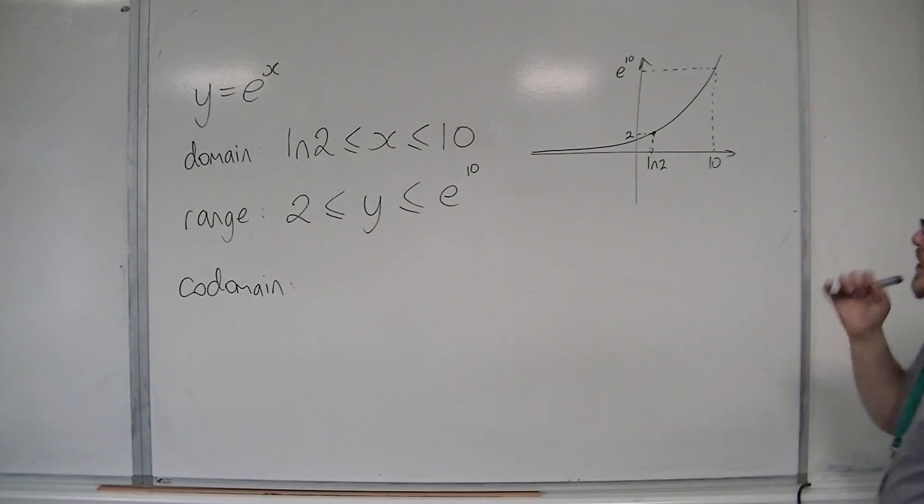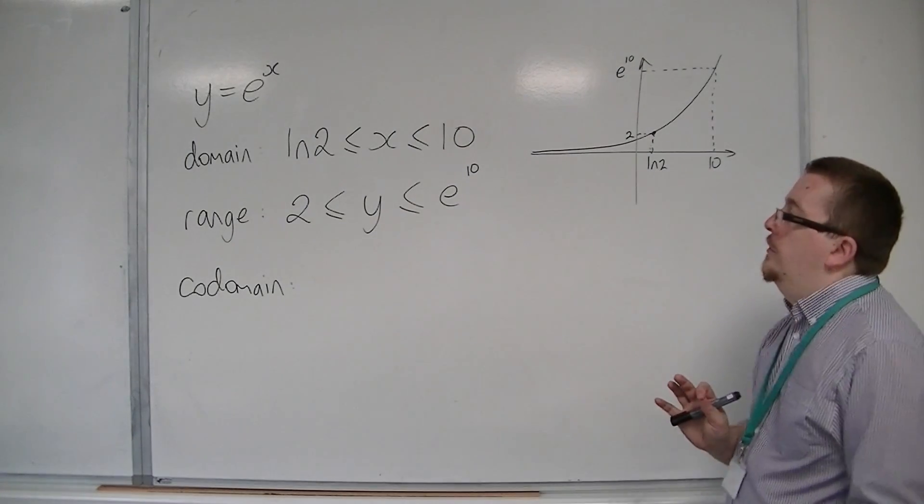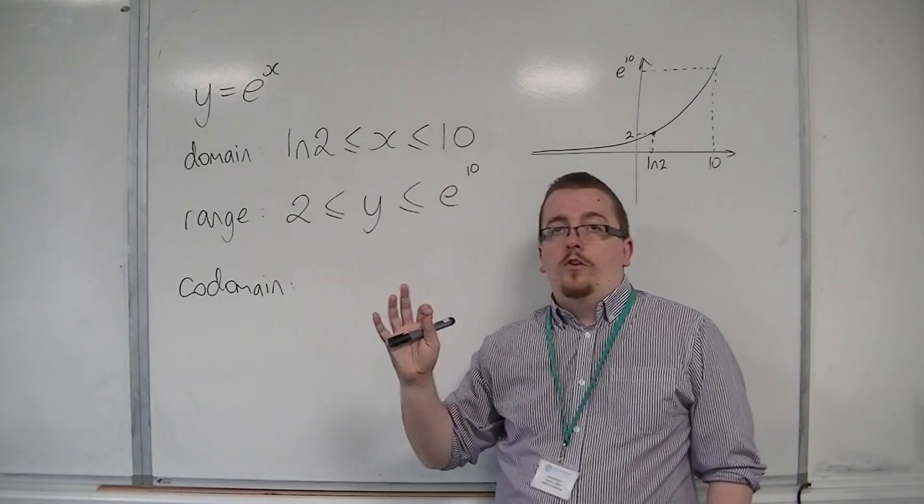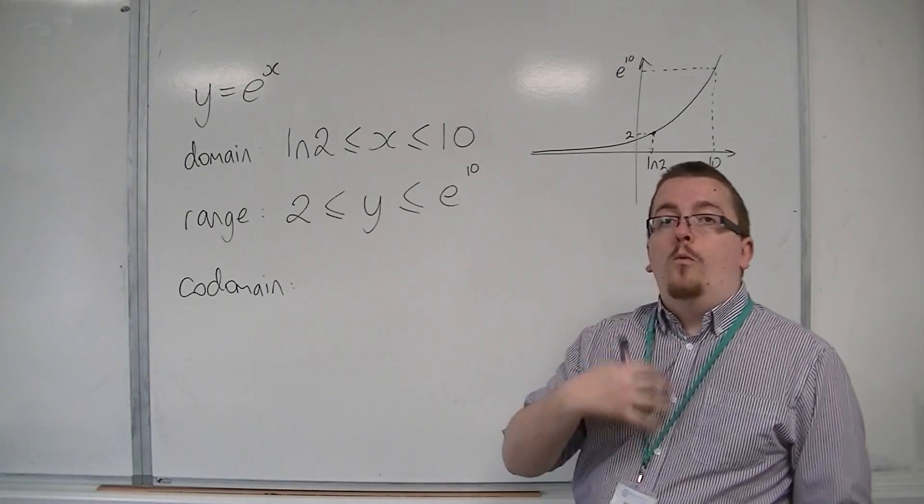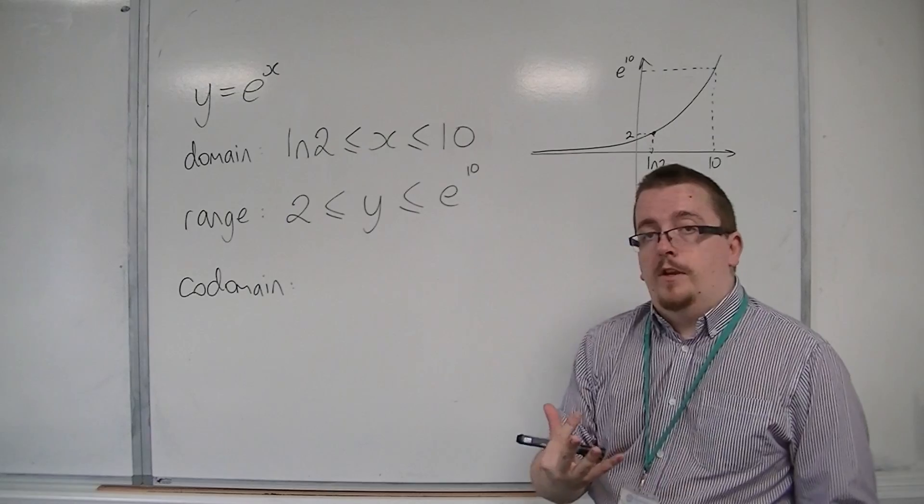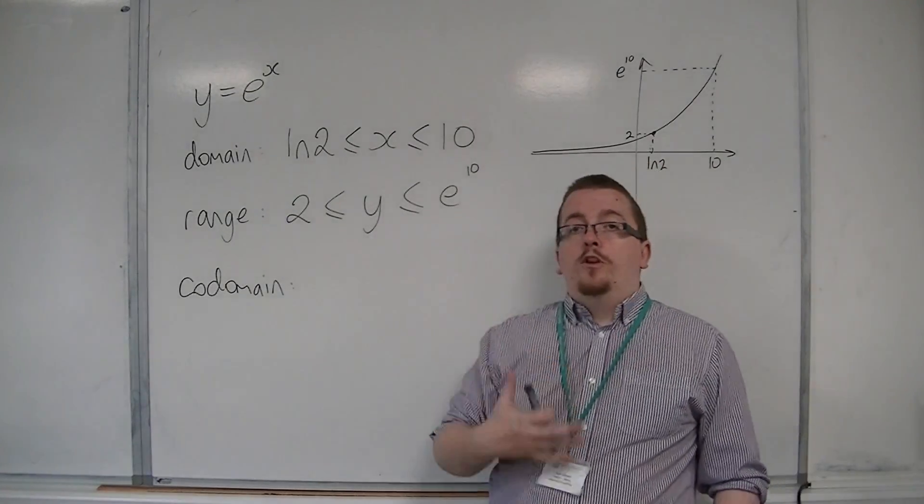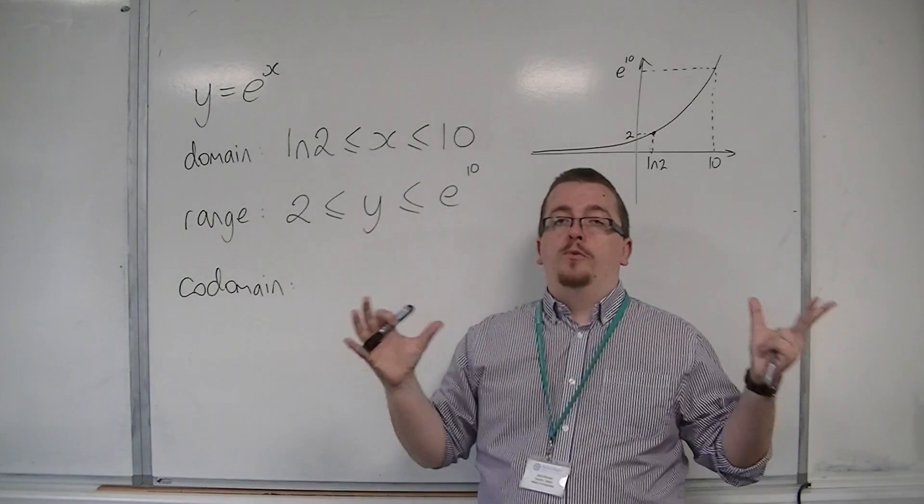Now the codomain, what that's looking for is if there were no restriction on the domain, what would the range be? So the codomain is looking at the range if you're looking at the greatest possible domain.